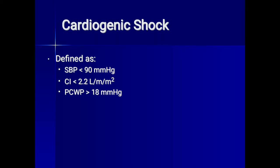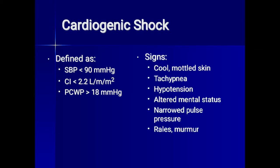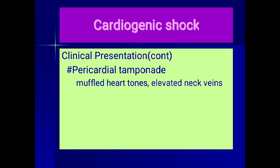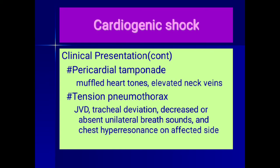Cardiogenic shock is defined as systolic blood pressure less than 90 mmHg, cardiac index less than 2.2 L/min/m², and pulmonary capillary wedge pressure greater than 18 mmHg. Signs include cool mottled skin, tachypnea, hypotension, altered mental status, and narrowed pulse pressure. Pericardial tamponade presents with muffled heart tones, elevated neck veins, and jugular venous distension. Tension pneumothorax presents with jugular venous distension, tracheal deviation, decreased or absent unilateral breath sounds, and chest hyporesonance on the affected side.